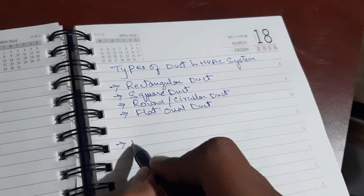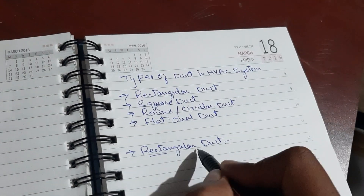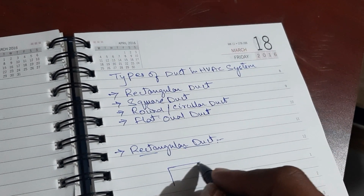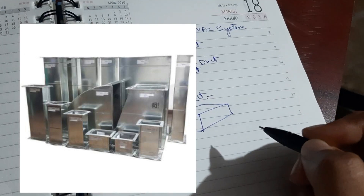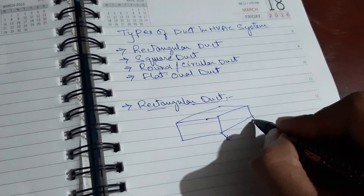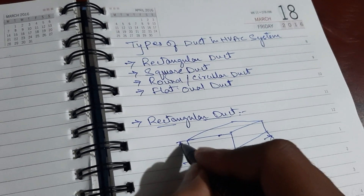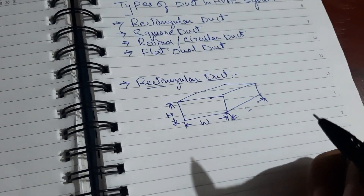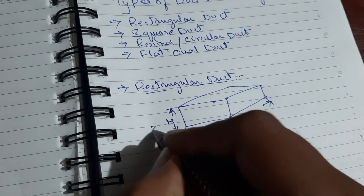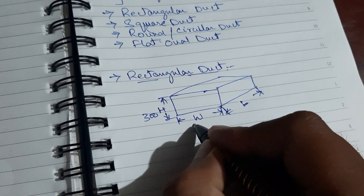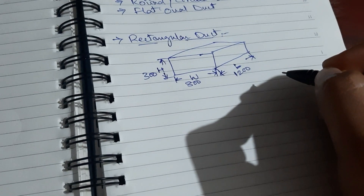First we will discuss about rectangular duct. I will draw a sample diagram — you can also see in the picture. That will be the length, this will be the width of the duct, and this will be the height. For example, take height as 300 mm, width as 800 mm, and length as 1200 mm. I am taking these as examples.